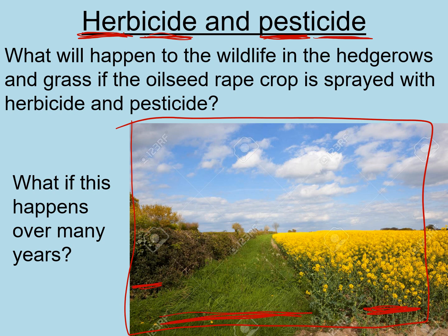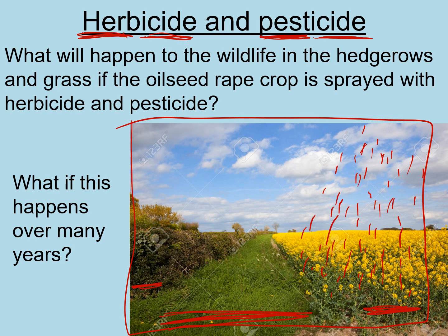In the grass border and hedgerows there'll be lots of wildlife living there. I want you to pause the video and think about what will happen to the wildlife if the oilseed rape is sprayed with herbicides and pesticides, and what will happen if this occurs over many years — say one year the farmer grows and sprays the crop, harvests it, then does it again the next year, with more and more spraying each time.